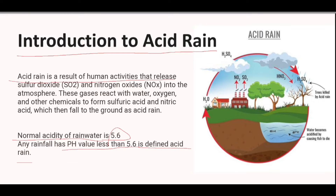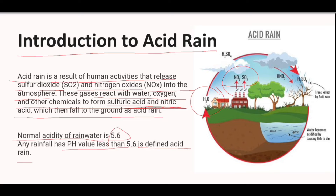Acid rain is a result of human activities that release sulfur dioxide and nitrogen oxide — these two major gases are responsible for acid rain. They are released into the atmosphere and react with water, oxygen, and other chemicals to form sulfuric acid and nitric acid, which are the two acids present in acid rain.